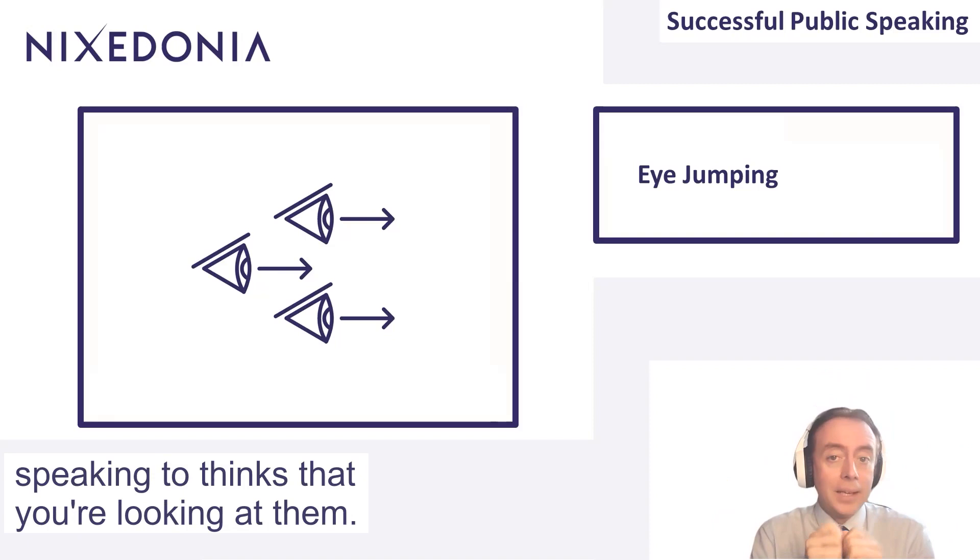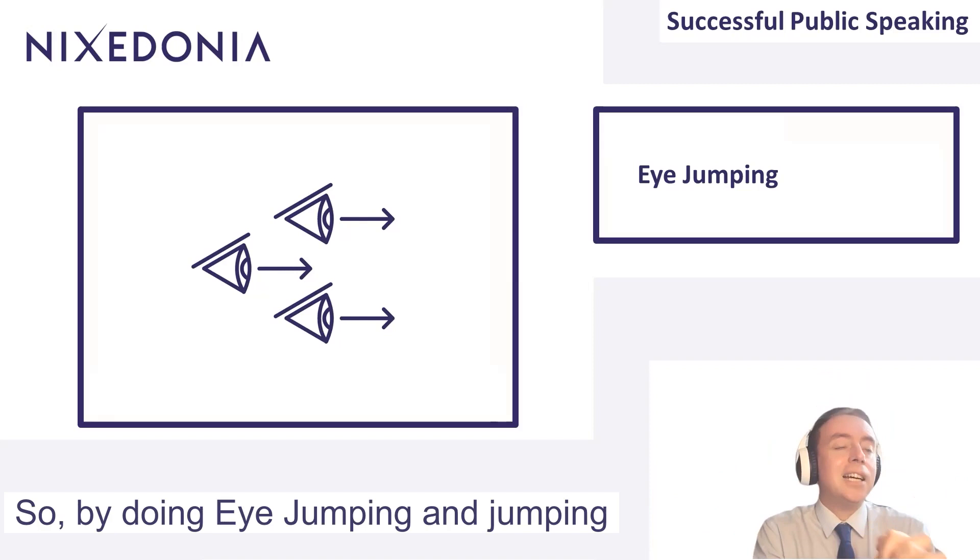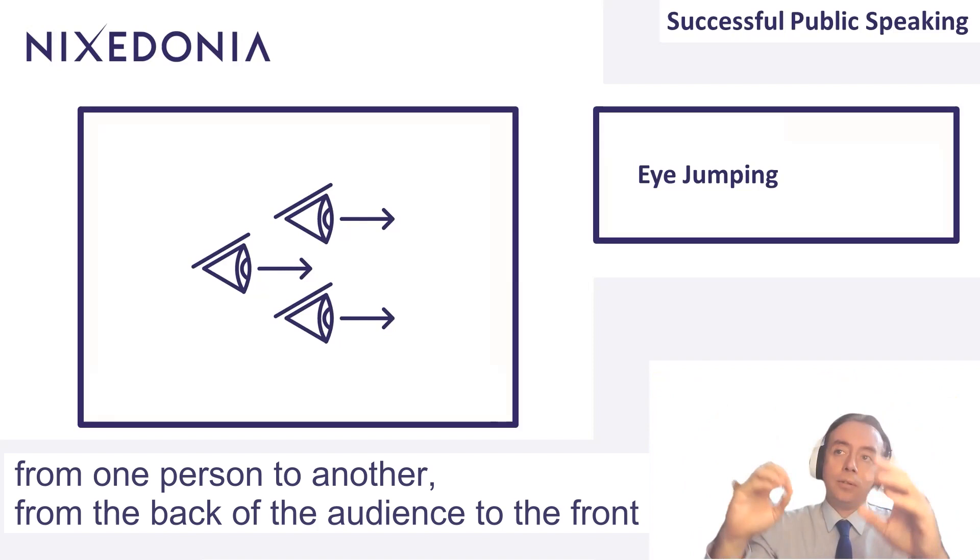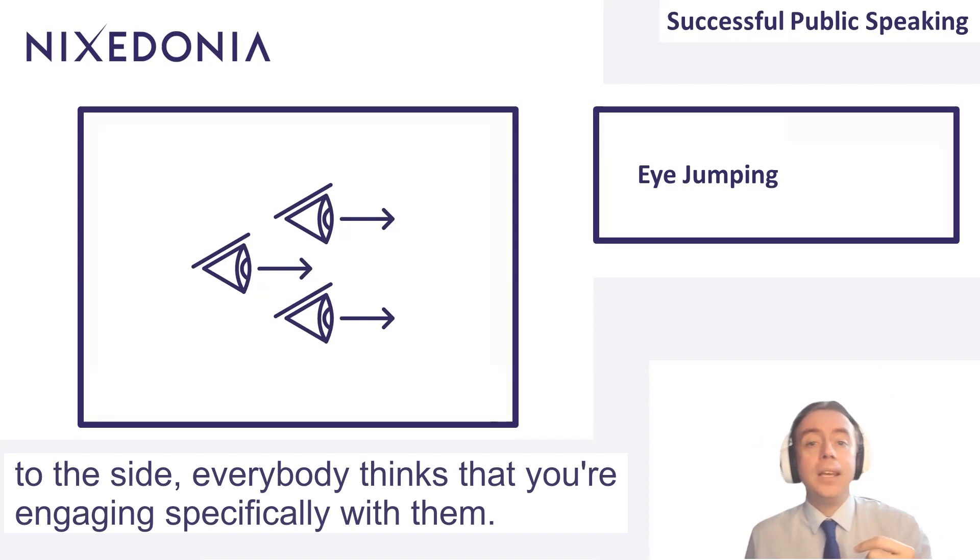From the perspective of the people in the audience, everybody around that person you're speaking to thinks you're looking at them. It's like cones radiating out of your eyes. By doing eye jumping and jumping from one person to another, from the back of the audience to the front to the side, everybody thinks you're engaging specifically with them. Don't only present to the front of the audience.